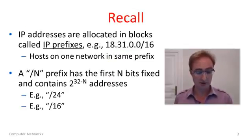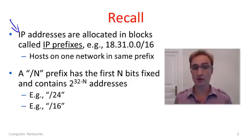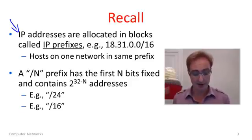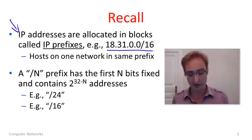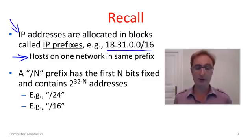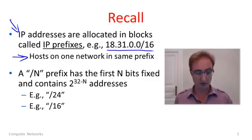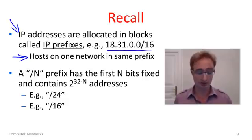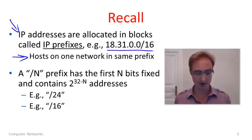Just a little bit of background. IP addresses are allocated in blocks called IP prefixes, such as this prefix 18.31.0.0/16. A key observation is the hosts on one network share the same prefix, and because they share the same prefix, we can route towards the prefix. That's where we're getting scalability in routing.